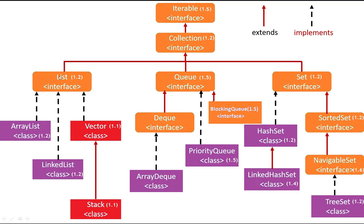Most of the time, my frequent operation is retrieval. I want to retrieve data most of the time. So the three requirements — store in insertion order, allow null and duplicates, and frequent retrieval operations — mean I go with the List interface. We will discuss in detail why we use the List interface for these requirements in upcoming videos. This video's purpose is only the overview of this collection.